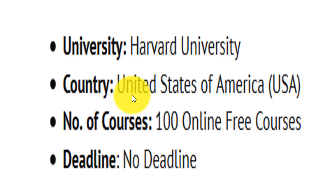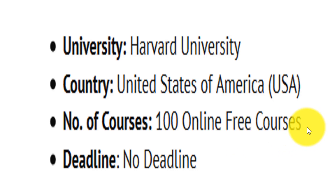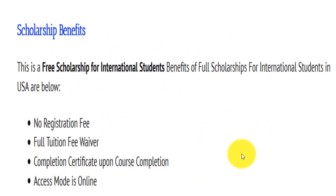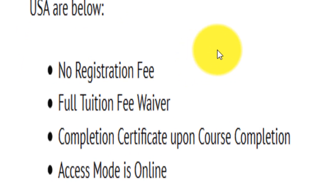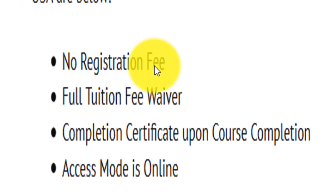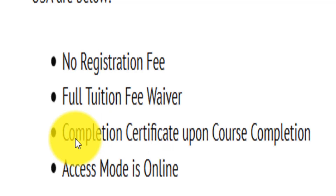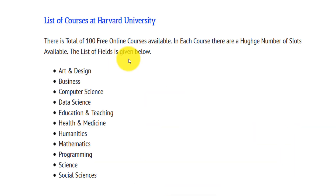The country is United States of America. Number of courses: 100 online free courses. It is offering a free scholarship for 100 courses online. The deadline is no deadline for these courses. The benefits of this scholarship program: first, no registration fees; second, full tuition fee waiver; third, completion certification on course completion. The access mode is online, meaning you can access these courses from anywhere in the world.